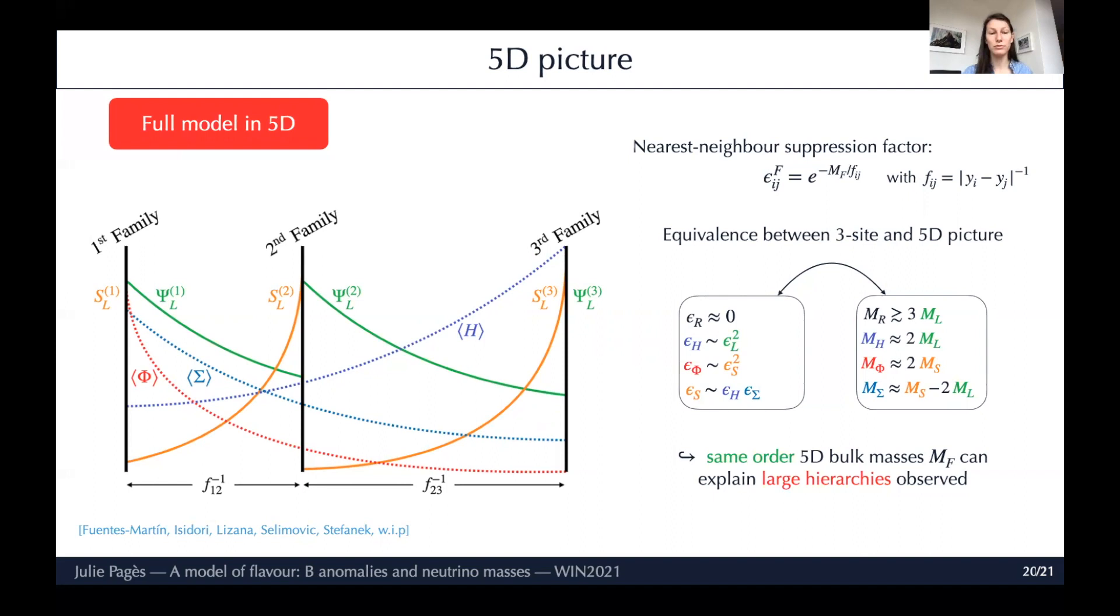Now just to finish this talk, let me mention the duality between this construction - the deconstructed model and the full 5D model. We can identify the ε, the nearest-neighbor suppression factors, with the exponential decay of the 5D profiles of our fields. The strength of this exponential decay is controlled by the bulk mass of our 5D fields. This means that all our relations we found on the ε can be translated into relations on the 5D bulk mass. The nice thing of this 5D construction is that now same-order 5D bulk masses can explain the large hierarchies of the VEVs in the deconstructed model.